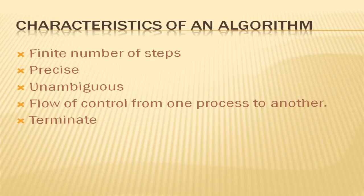Precise. Each step must be exact in nature. Unambiguous. Unambiguous means clear. So each step of the algorithm must be clearly stated and leads to only one interpretation.